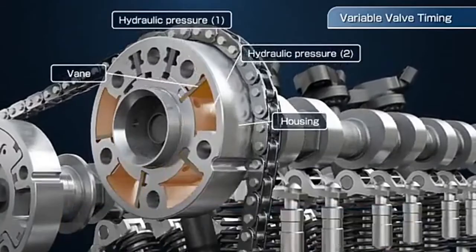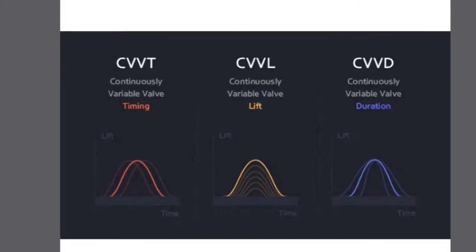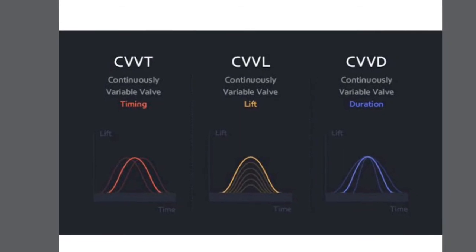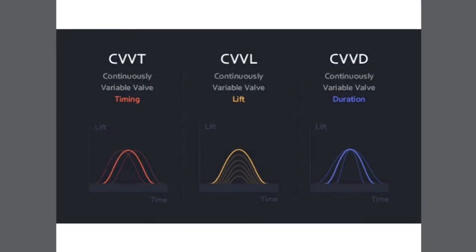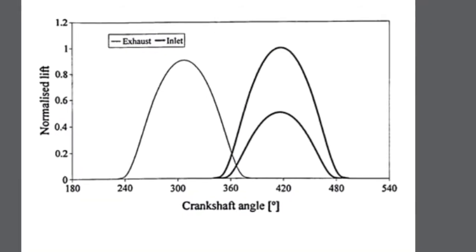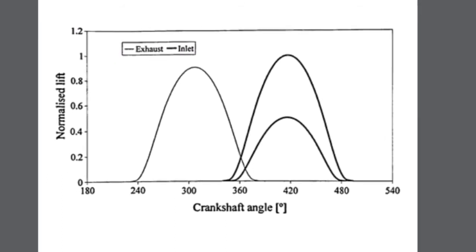In VVL, or variable valve lift, we will be able to change the curtain area of the valve, or the distance the valve travels from the head to the maximum open position. If you are able to provide a higher curtain area, the air can easily enter the combustion chamber and we can avail maximum air for producing maximum power.